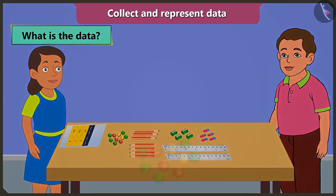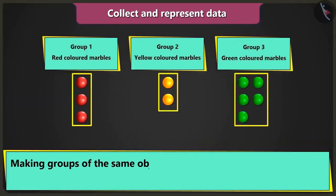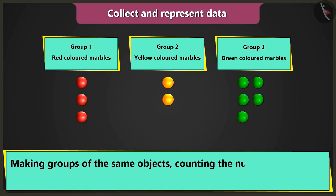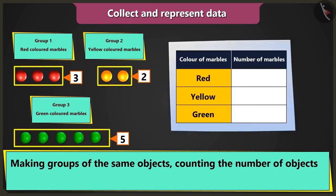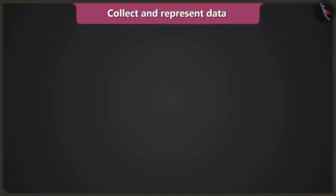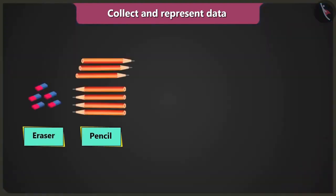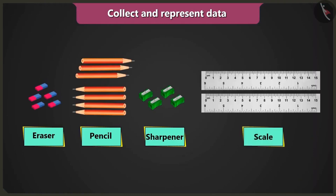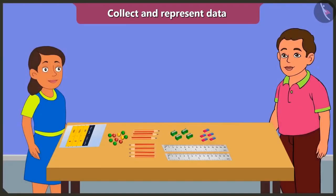Data? What is that? Making groups of similar objects, counting the number of objects in the group, and filling that information in a table is called data. Bunty, this way I can easily know how many erasers, pencils, sharpeners, and scales I have. Yes! Let me teach you one more way to collect data and fill it in the table.